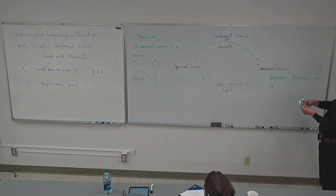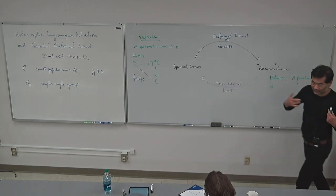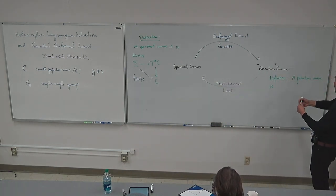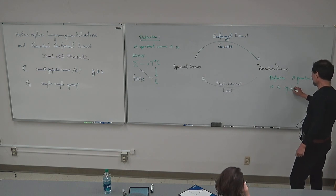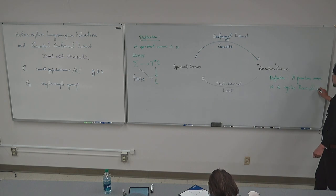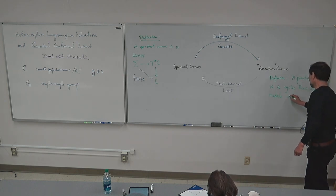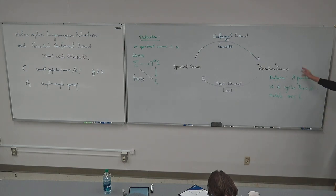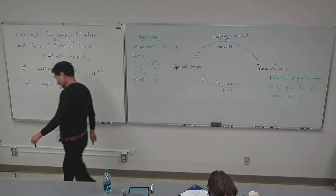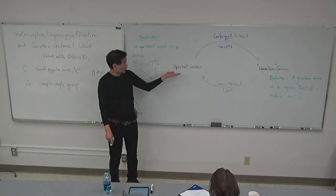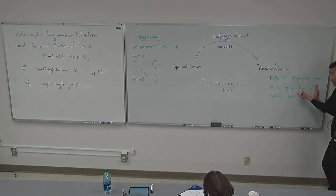And then a quantum curve — again, this is not attempting to capture the physicist's concept. But to us, this is simply a cyclic Rees D-module defined over the curve C. This is the concept. And then I can define the Gaiotto correspondence, going in one-to-one correspondence from here to the moduli space of such objects. The construction is a moduli-to-moduli object.